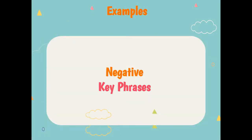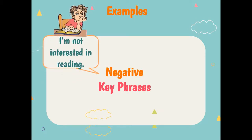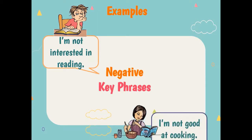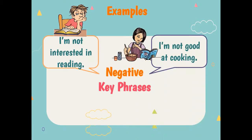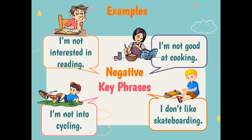All right kids, these are some of the examples on how to talk about hobbies and interests using the negative key phrases. Bear in mind that negative means something that you don't like to do. Let us see some of the examples: I'm not interested in reading. I'm not good at cooking. I'm not into cycling. I don't like skateboarding.